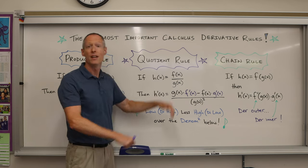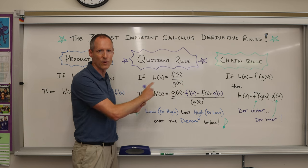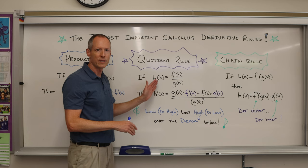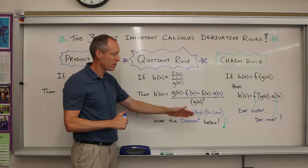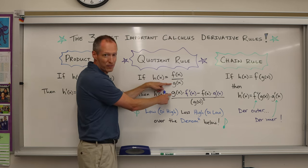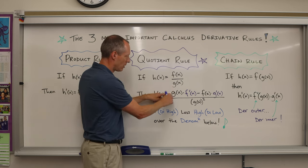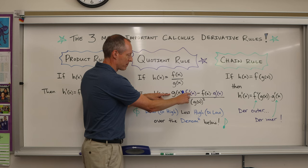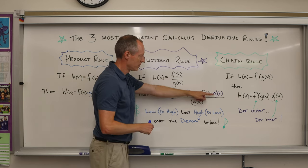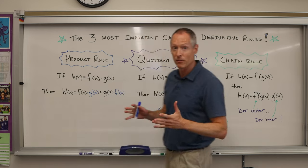Here is the memory device: if it's the quotient rule you wish to know, it's low d high less high d low over the denominator squared below. The short version is low d high less high d low over the denominator squared below. Let's look at that - so low, the bottom one, d high. Di stands for differentiate, take the derivative. So low d high, f'(x), less high d low over the denominator squared below.